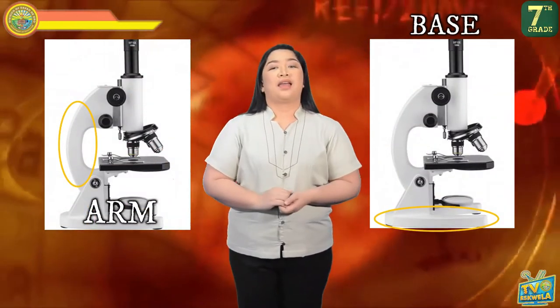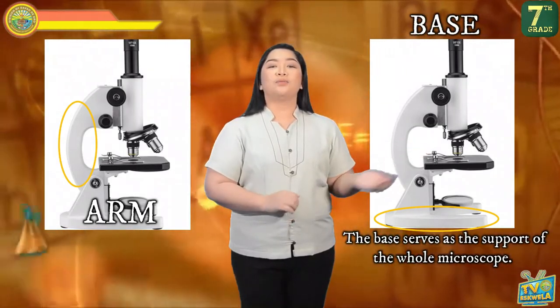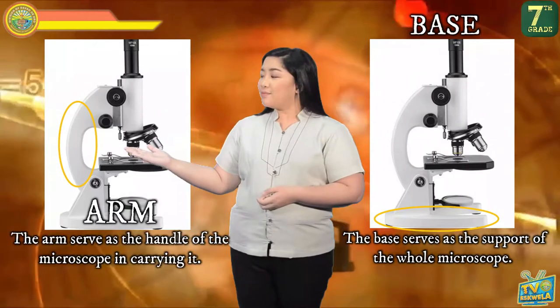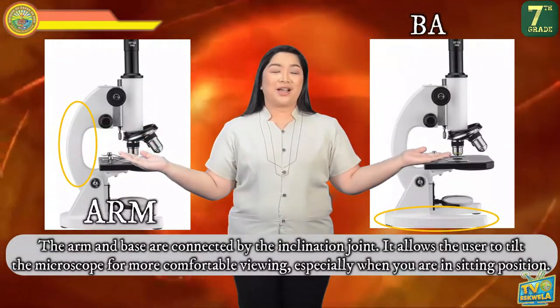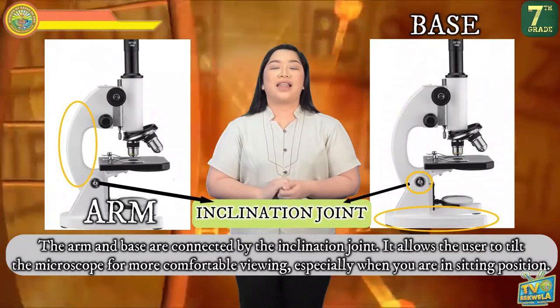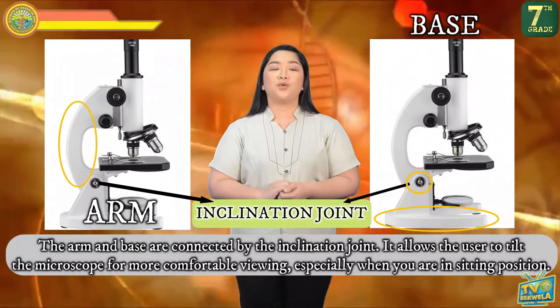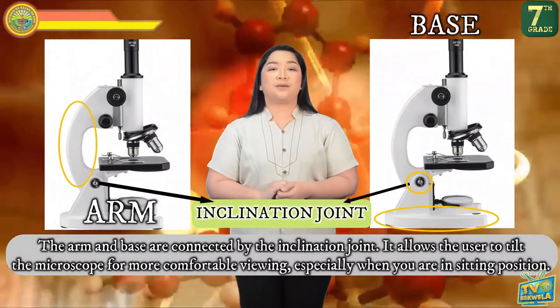The arm serves as the handle of the microscope for carrying it, and the base serves as the support of the whole microscope. The arm and base are connected by the inclination joint, which allows the user to tilt the microscope for more comfortable viewing, especially when sitting. However, you must only tilt the microscope when working with dry specimens. Tilting with liquid specimens can cause liquid to spill and flow into the metal parts, causing rusting which can damage the microscope.